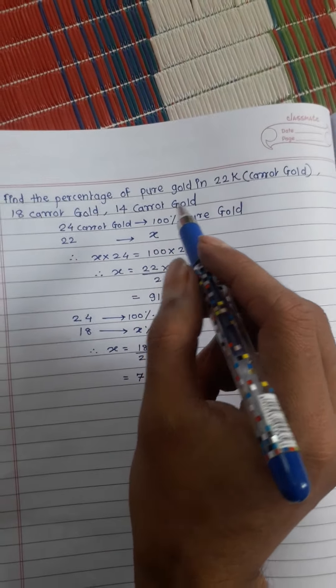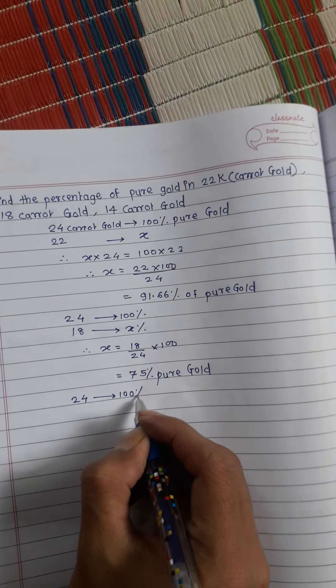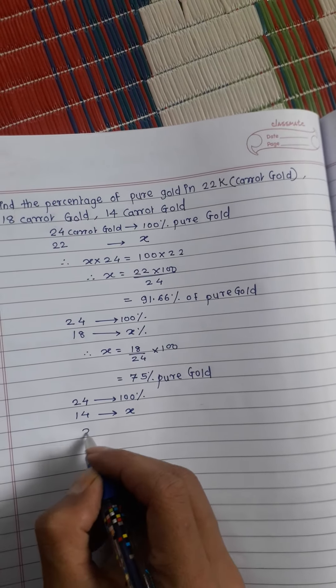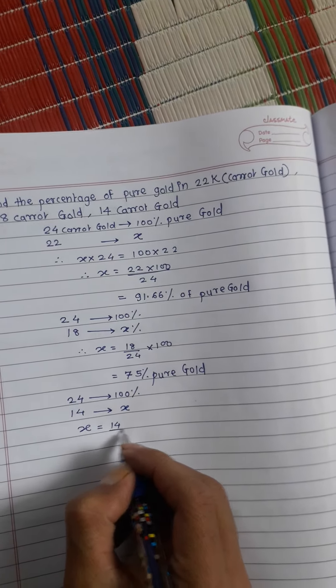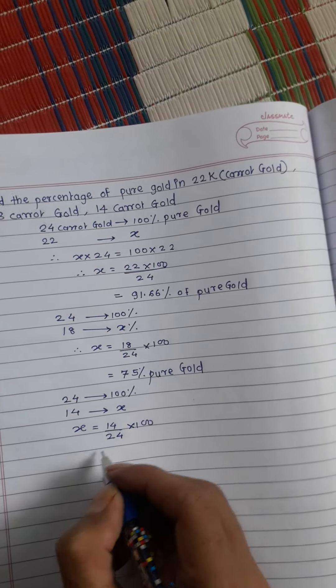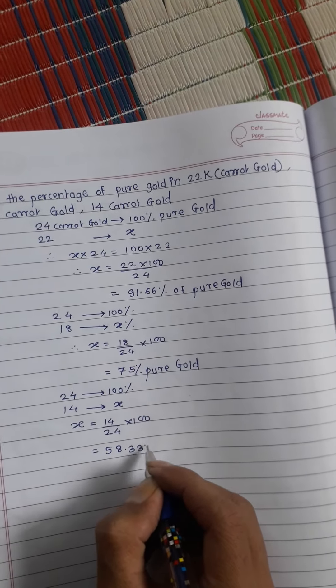In the same way we will calculate how much percentage of pure gold in 14 carat. 24 carat means hundred percent pure gold, therefore 14 carat means how much. X is equal to 14 divided by 24 multiply by 100. It will come 58.33 percent gold.